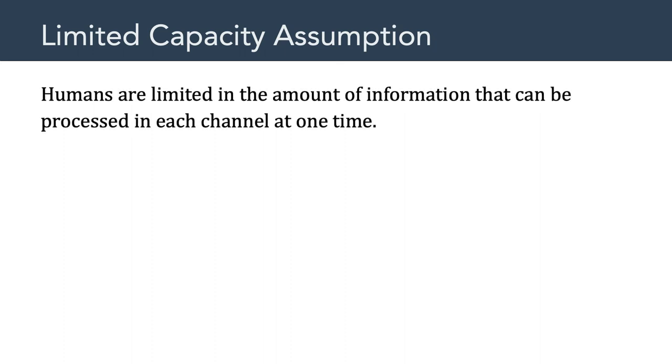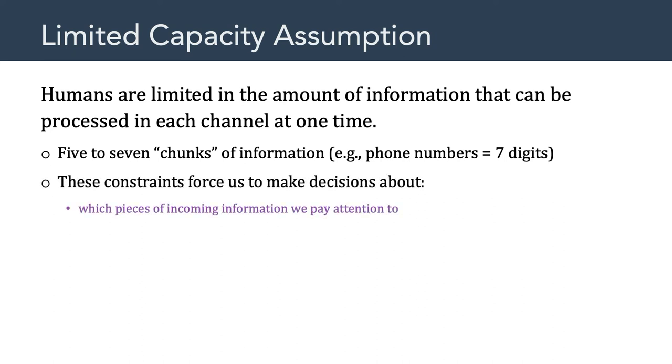Now, the second assumption that the cognitive theory of multimedia learning is based on is called the limited capacity assumption. And this is the idea that humans are limited in the amount of information that can be processed in each of those channels at one time. Now, you've all heard the idea that we can process five to seven chunks of information. That's actually why phone numbers are seven digits. This limited capacity forces us to make decisions about certain things. As humans, we have to make decisions about what pieces of incoming information we're going to pay attention to.